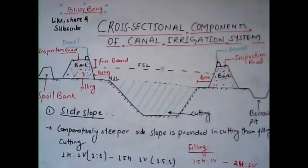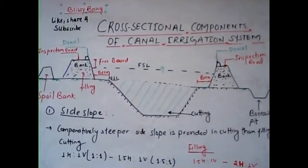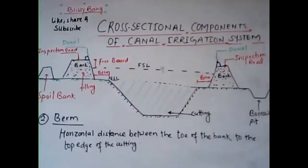A typical slope of 1 horizontal to 1 vertical (1:1) to 1.5 horizontal to 1 vertical (1.5:1) can be provided in the cutting section. In the filling section, slopes of 1.5:1 to 2:1 are generally provided.